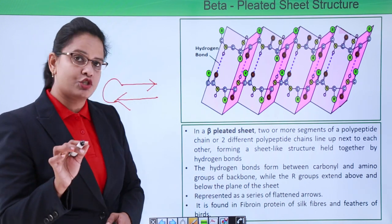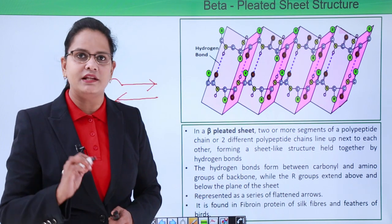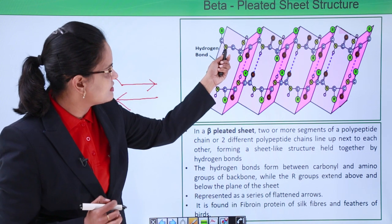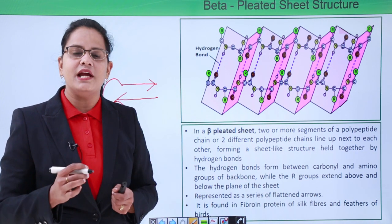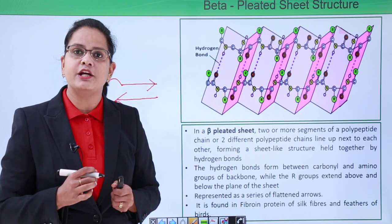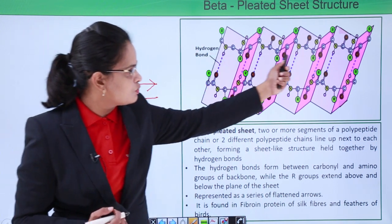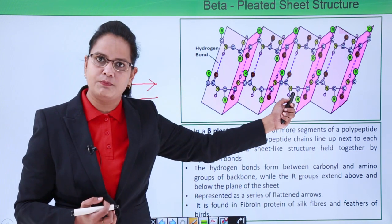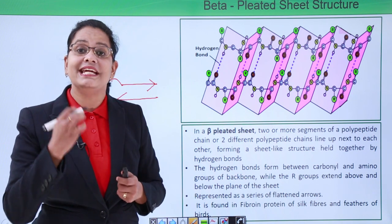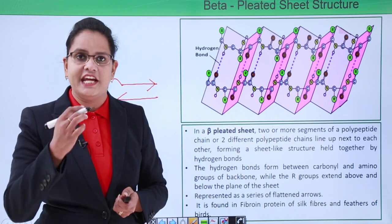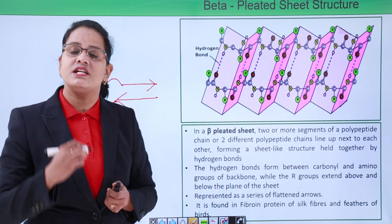The beta structure has hydrogen bonding between the same types of groups — the carbonyl and the amide group. As you can see, this is the amide group and this is the carbonyl group, but these groups belong to different polypeptide chains. The bonding is intermolecular — it is between two segments or two polypeptides.